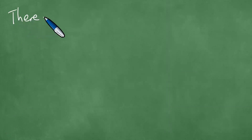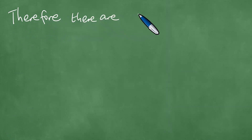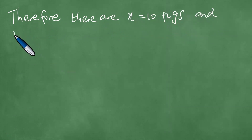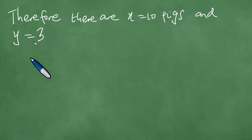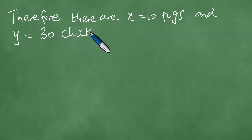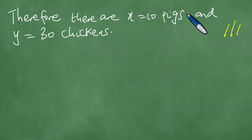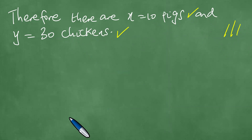We are able to make the following inference. Therefore, X equals 10 pigs and Y equals 30 chickens. This concludes the solution to the problem: 10 pigs and 30 chickens. We are excited about this — this is awesome news.